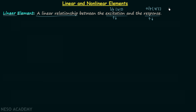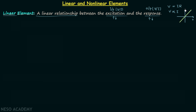For example, in the case of resistors, the voltage across the resistor is equal to the current through the resistor multiplied by the resistance, or we can say V is proportional to I, because R is a constant. Therefore, when we plot the VI characteristics for the resistor, we get a straight line where the slope is equal to 1 over resistance. On increasing the voltage, the current increases linearly, and therefore resistor is a linear element.